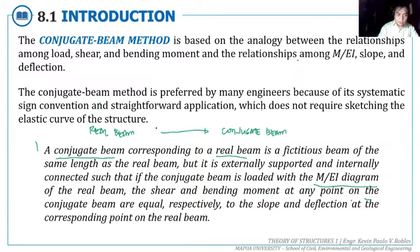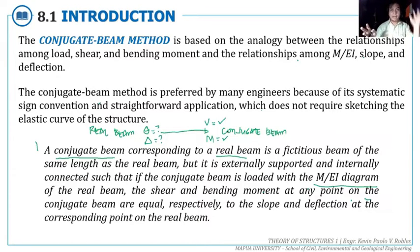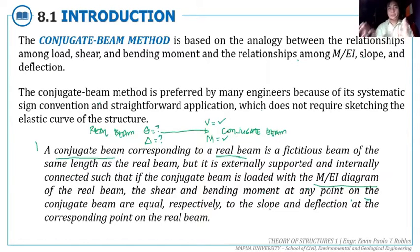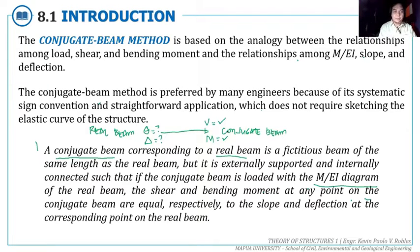If we want to solve for the slope and deflection of the real beam, those correspond to the shear and moment of the conjugate beam. After producing the conjugate beam and placing the moment diagram as loads, we analyze the conjugate beam due to those loads. At any point on the conjugate beam, the shear force corresponds to the slope of the real beam, and the moment on the conjugate beam corresponds to the deflection on the real beam.